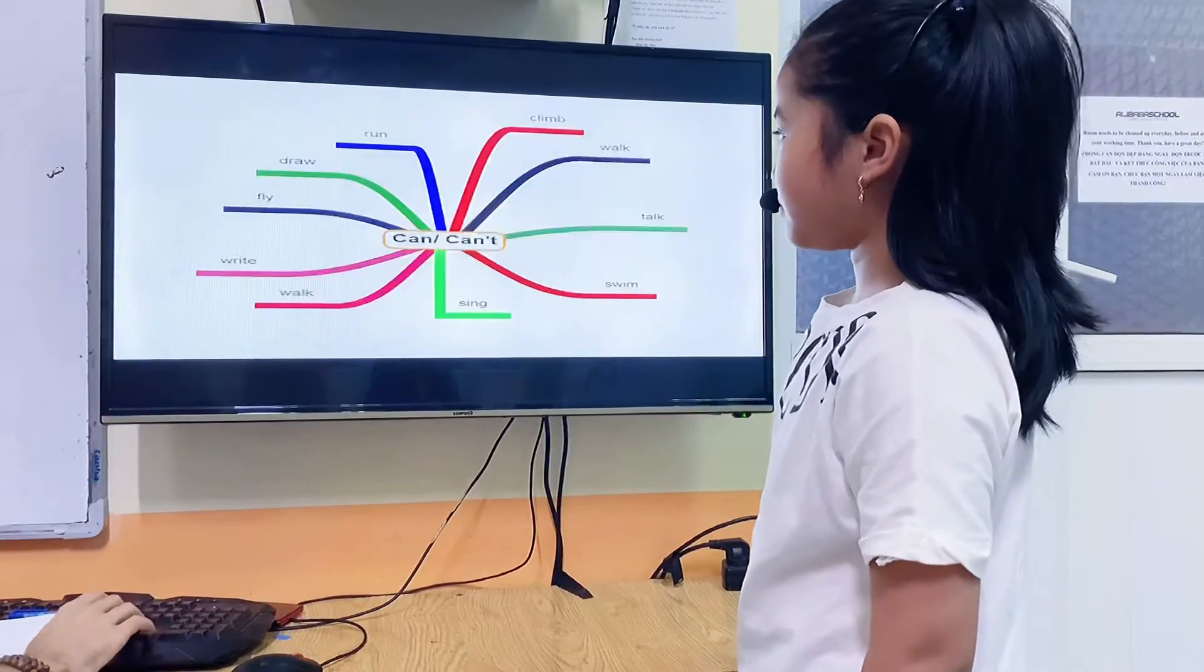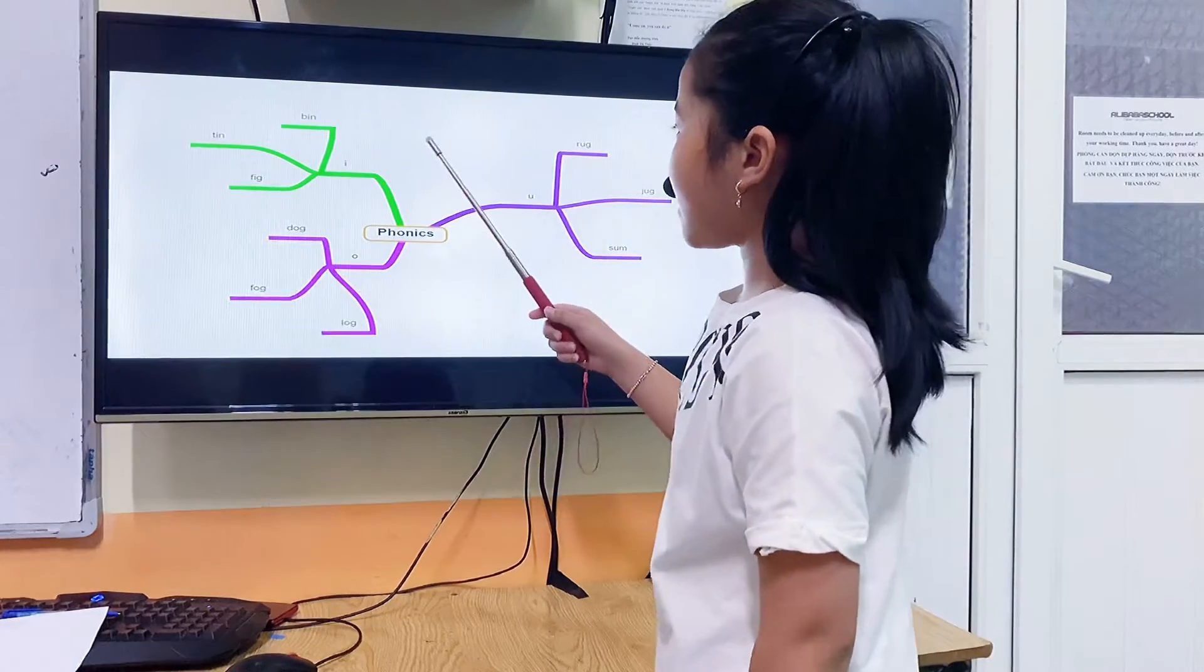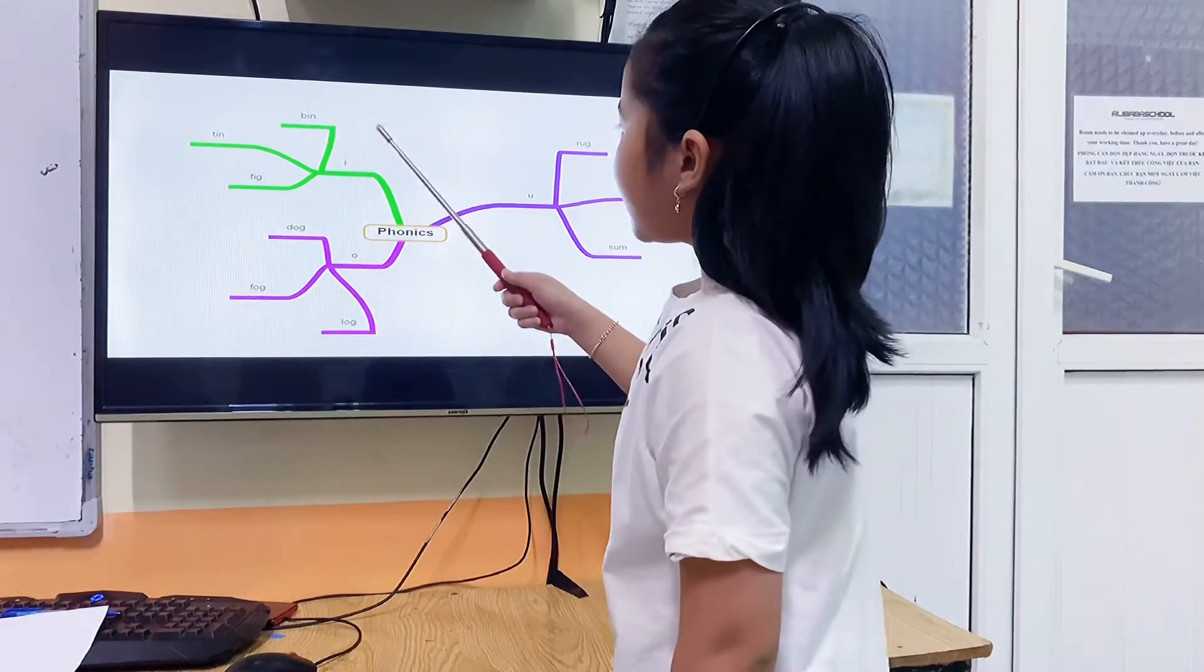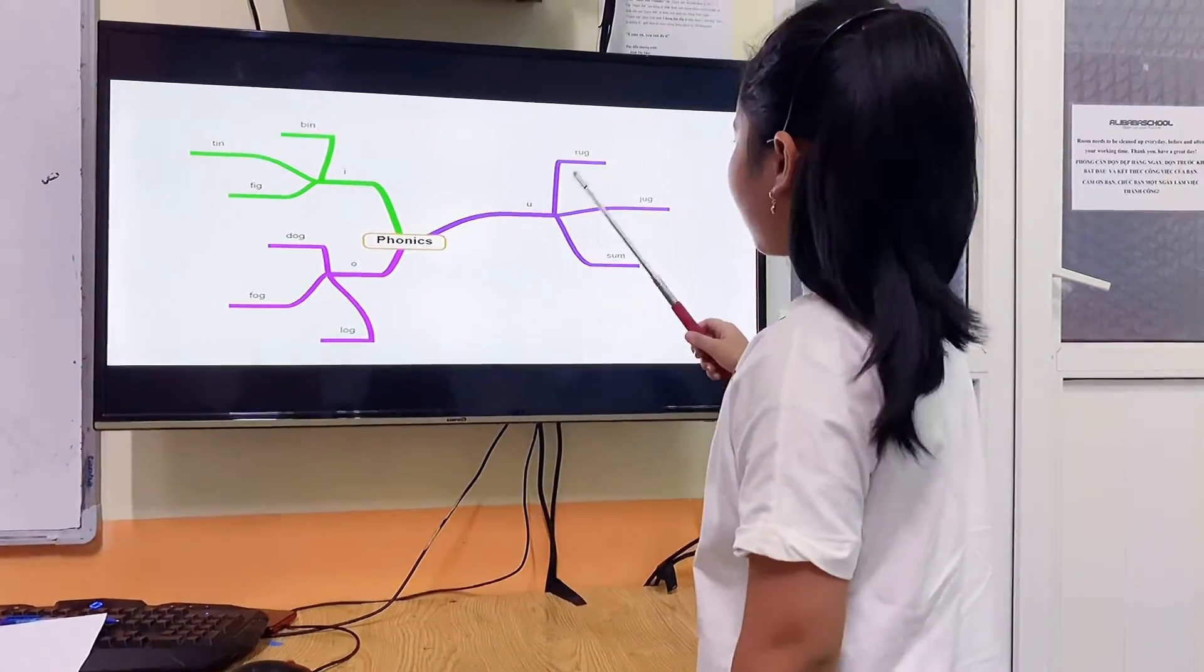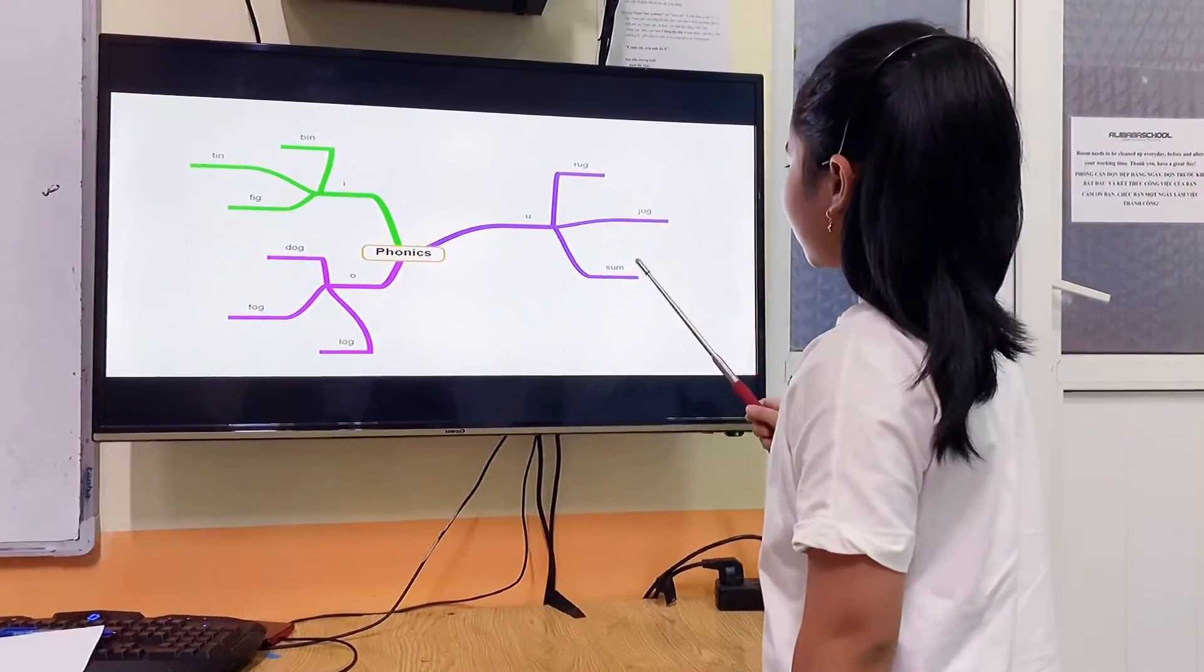Now, let me put this one here. Letter A, sound E. Bean, team, pick. Letter U, sound O. Rock, jump, jump.